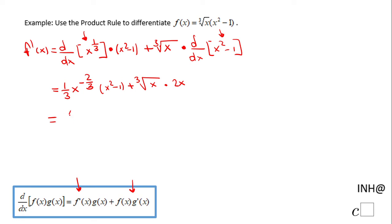have x square minus 1 over 3 times x to the 2 thirds. Let's leave it in this form, we can write in the radical form, plus and here the last part is going to be 2x cubic root of x and this is f prime of x.